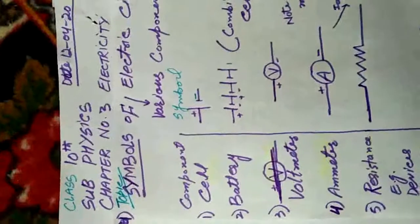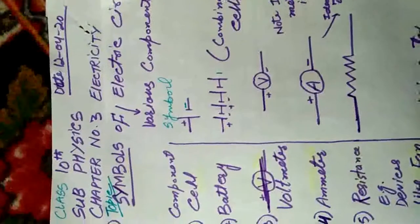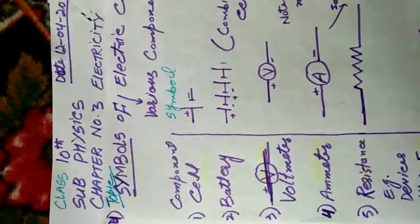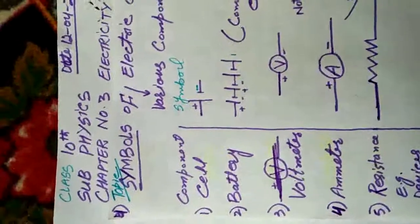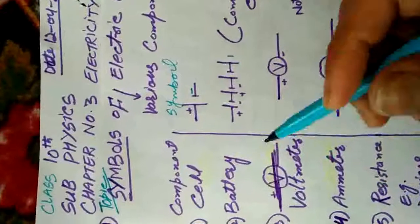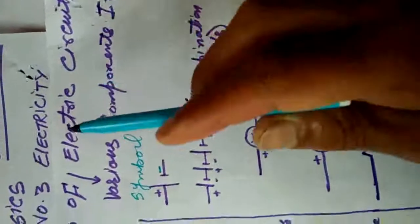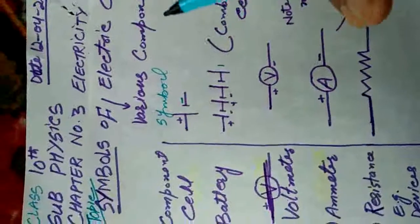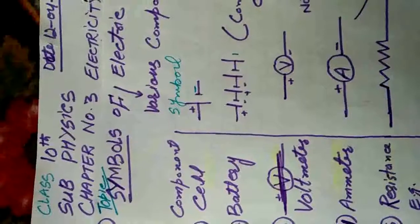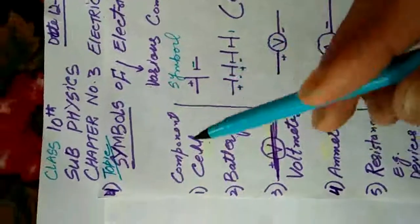Assalamu alaikum warahmatullahi wabarakatuh. I am Abdul Qayyum from FEI Naugam. Dear students, welcome to all of you in the online classes of FEI Naugam. In the previous lecture, we discussed about electric circuit. Today we will discuss about symbols of various components in an electric circuit — what components are there in an electric circuit and how to represent those components using symbols.